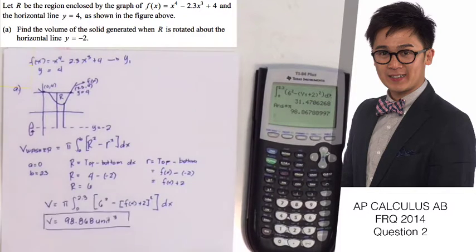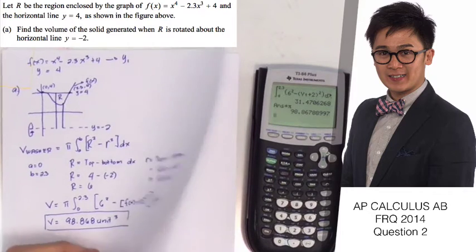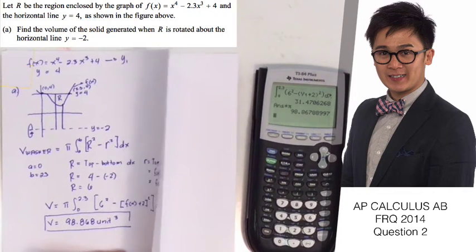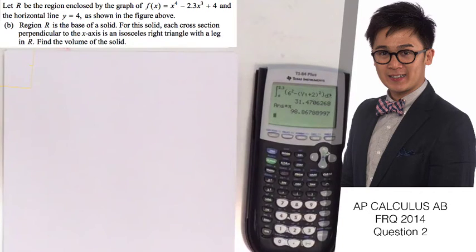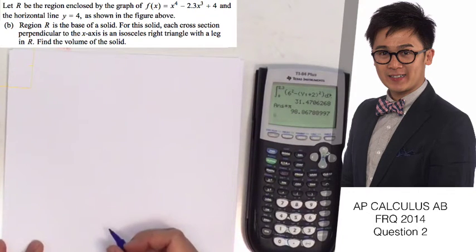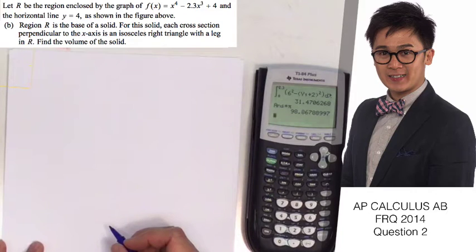This is how we answer question letter A. For question letter B, we're supposed to find the volume of a solid where the region R is the base, and each cross-section perpendicular to the x-axis is an isosceles right triangle with a leg in R.